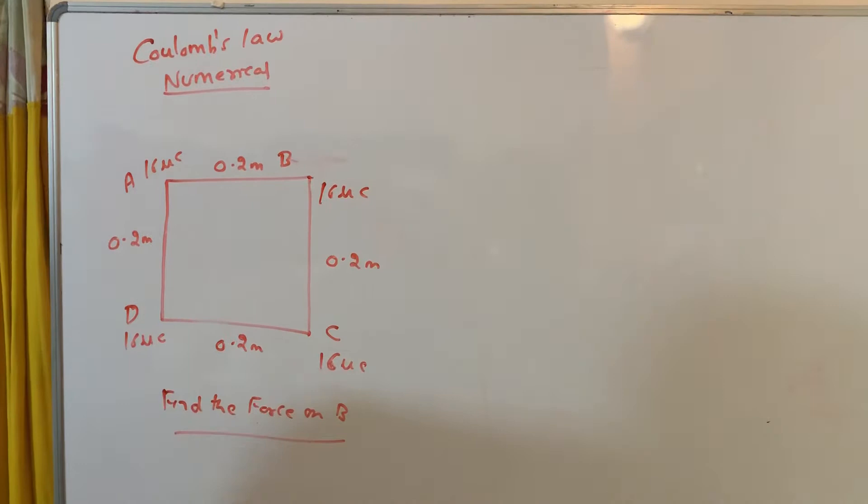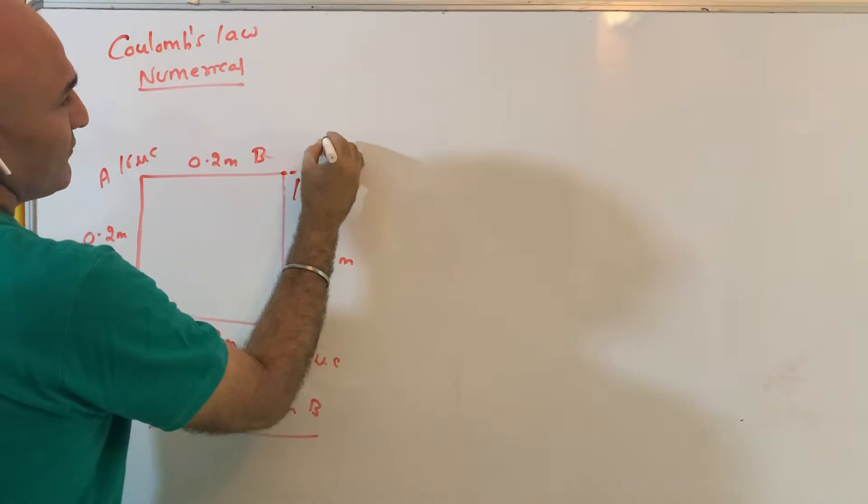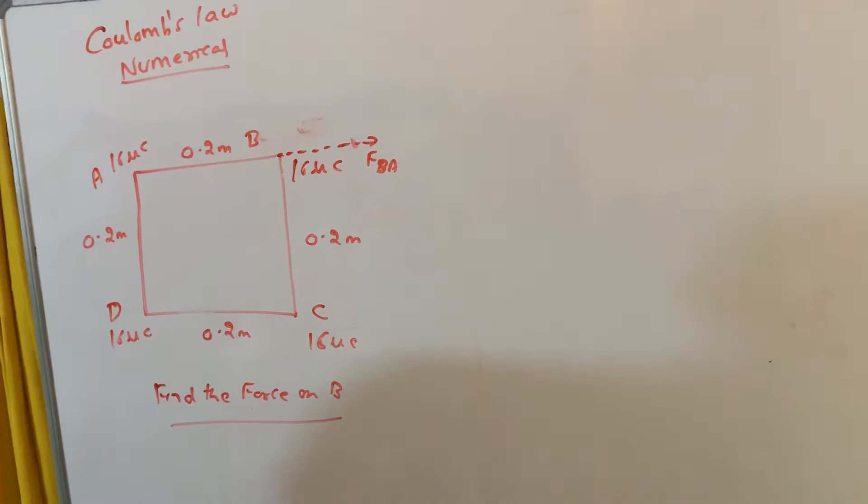All are 16 microcoulomb, that doesn't matter. They can give you, last year question came they are given in terms of Q only. So individually you will find. So first you will find force on B due to A. See these two are same charges so this will get repelled, the force will be in this direction. So you will write force on B due to A. How do you read it? Force on B due to A.